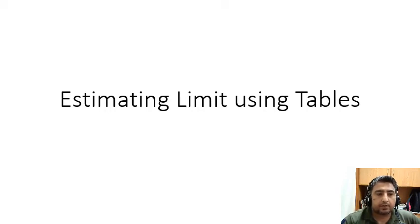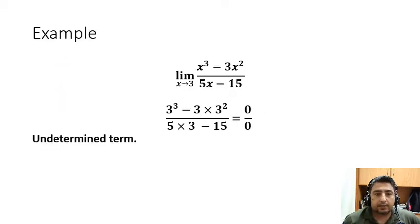In this part of the lecture, we are going to learn about the second method of estimating limits using tables. Let's try this example: we have a function x³ - 3x² divided by 5x - 15, limit as x approaches 3.